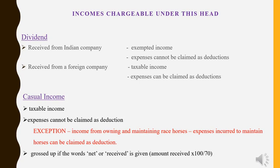For lottery winnings, card games, gambling, puzzles, betting, and all other casual incomes, expenses cannot be claimed. Expenses can be claimed only for owning and maintaining race horses. Another important provision under casual income is grossing up. Usually, tax is deducted at source at 30% for casual income, so we have to calculate the gross amount and bring it to tax. When should we do this grossing up? If the income exceeds 10,000 and the words 'net' or 'received' are given in the question, then you have to gross it up.